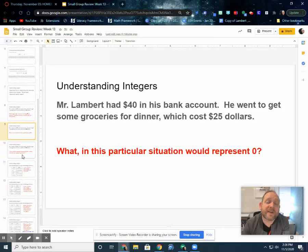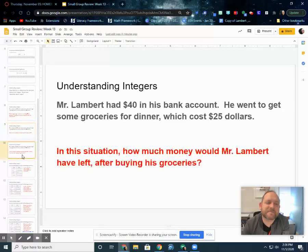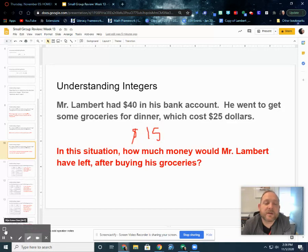You'll need to know that for your 8-step test. Guarantee it. All right. In this situation, how much money would Mr. Lambert have left after buying his groceries? Well, we just talked about that. We'd start at our $40, and we'd move 25 points to the left on a number line, or we'd take $25 away. If you were to work that out, $40 minus $25 is $15. And that should be your answer there for that.